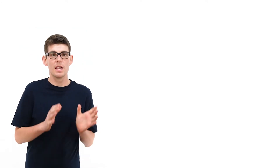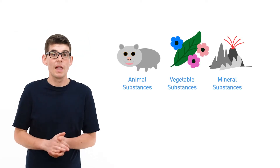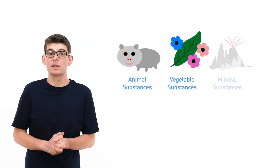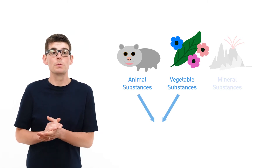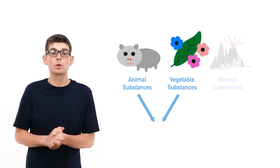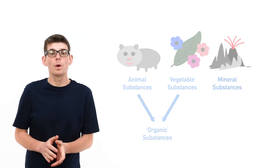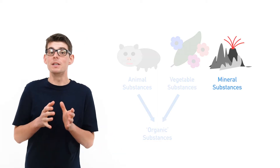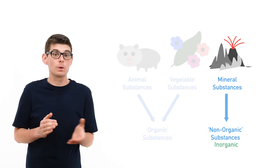In the early days of chemistry it was believed there were three main types of substance: animal, vegetable, and mineral. As animal and plant substances were both made by living organisms they were later grouped together and called organic substances, and those that weren't — minerals — were considered to be non-organic, or inorganic as we now call them.